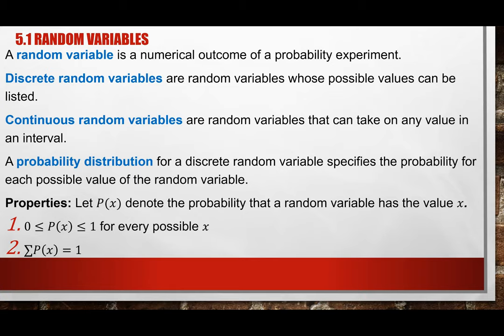The properties of a probability distribution: there are two properties it must satisfy. First, the probability P(x) can only be between 0 and 1 — it cannot be negative and cannot exceed 1. Second, the sum of all probabilities must equal 1. These are the same properties we used before.